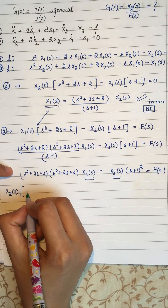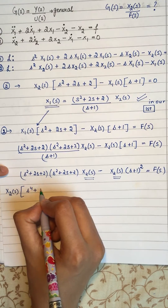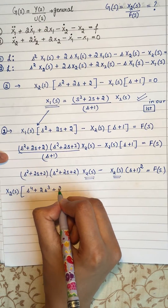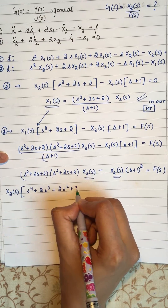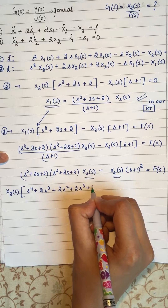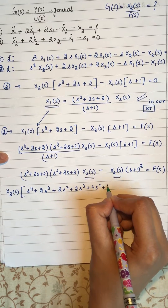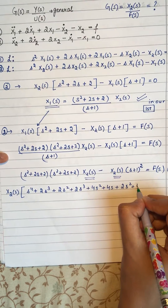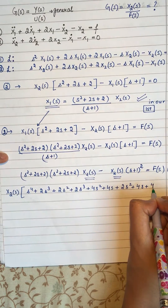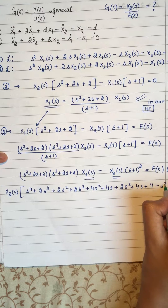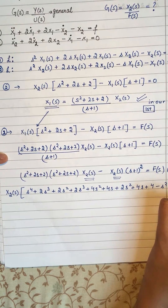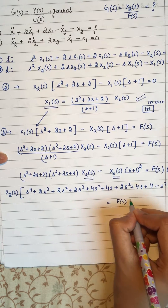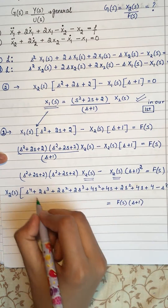Multiplying everything out inside, we get: s⁴ + 2s³ + 2s² + 2s³ + 4s² + 4s + 2s² + 4s + 4, minus s² minus 1 minus 2s, equals F(s)(s + 1).